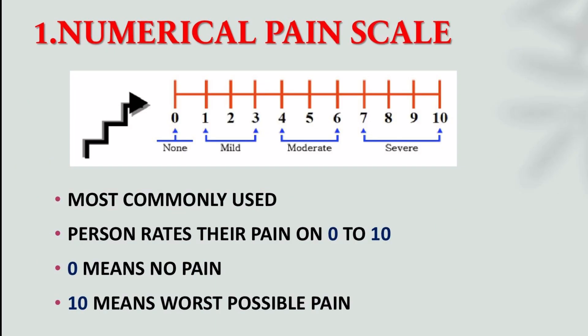The first commonly used pain scale is the numerical rating scale, or numerical pain scale. Here we use numbers to rate the pain — this is the most commonly used pain scale. The patient rates their pain on a scale of 0 to 10: 0 means no pain, 1 to 3 indicates mild pain, 4 to 6 is moderate, and 7 to 10 is severe.